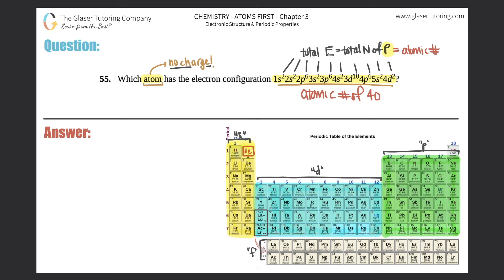And remember, every atomic number is different and unique from element to element — no two elements have the same atomic number. So all you've got to do is find where number 40 is on the periodic table. Number 40 is zirconium, and that's the atom — Zr. All you had to do is count up those electrons, that gives you the total number of protons, which is the atomic number, and then you find number 40 on the periodic table.